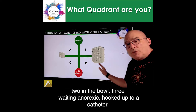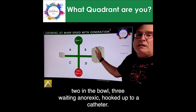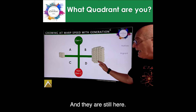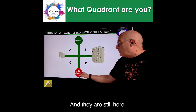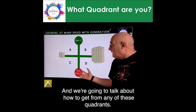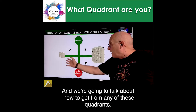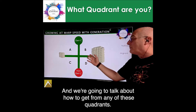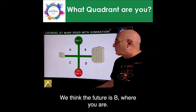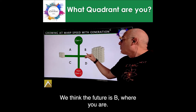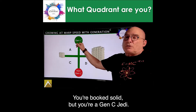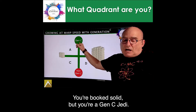There are a lot of non-Gen C hairdressers that are one in the chair, two in the bowl, three waiting — anorexic, hooked up to a catheter — and they are still here. We think the promised land, we think the future is Quadrant B, where you're booked solid but you're a Gen C Jedi.